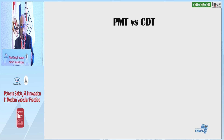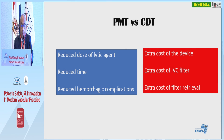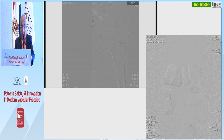Pharmacomechanical thrombolysis compared to catheter-directed thrombolysis offers reduced dose of lytic therapy, reduced time, and reduced hemorrhagic complications. But this comes at the extra cost of the devices, which are quite expensive, the extra cost of using an IVC filter required in the majority of patients, and the extra cost of a second procedure for filter removal.